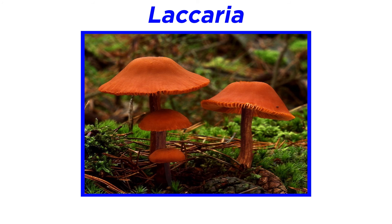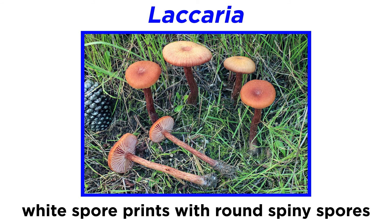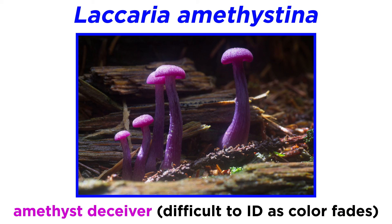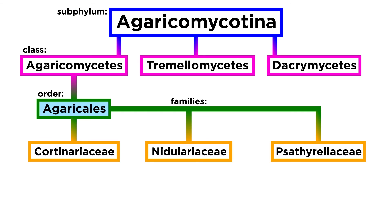The last genus we will discuss is Laccaria. These mushrooms are easy to recognize as they have thick and waxy-looking gills that are attached to the stipe. They form white spore prints, and under a microscope these spores are round with tiny spine-like projections. All Laccaria species form ectomycorrhizal relationships that are generally associated with tree roots in the order Fagales, which houses oak and beech trees. A notable species in the genus is Laccaria amethystina, or the amethyst deceiver. The name originates from difficulties in identification because the bright purple coloring fades with age.